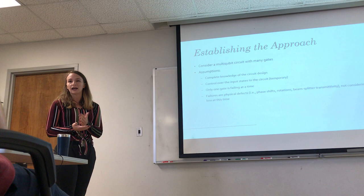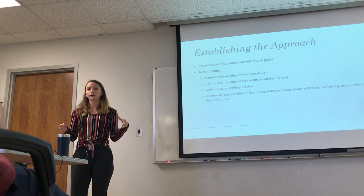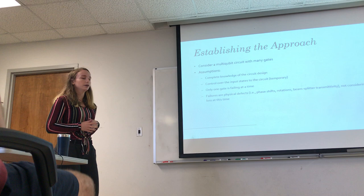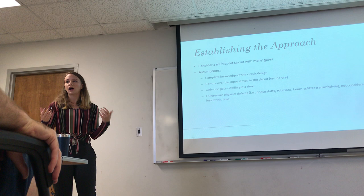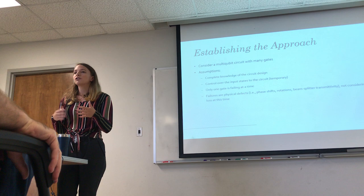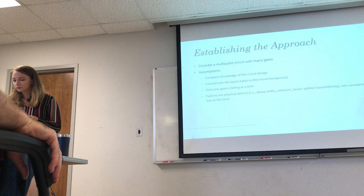We also assume complete control over the input states to the circuit — though I have this marked as temporary, because I don't think we'll carry that assumption all the way through. We're going to move away from requiring complete input control. We also assume only one gate is failing at a time, because before you can find a variety of failures, you should at least be able to find one. And finally, all gate failures can be modeled as a physical defect — an unintended phase shift, an unintended rotation, or something like a beam splitter with incorrect transmissivity.